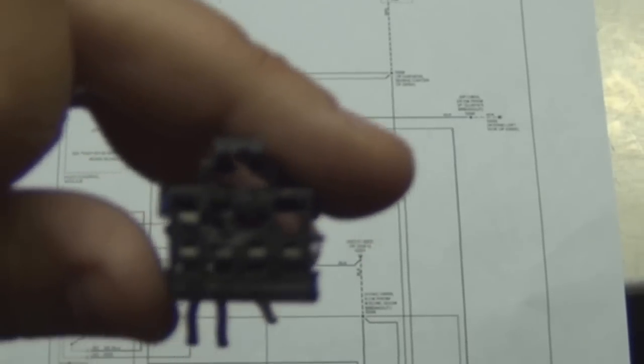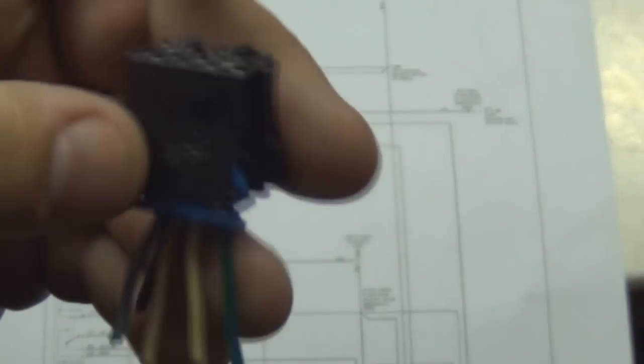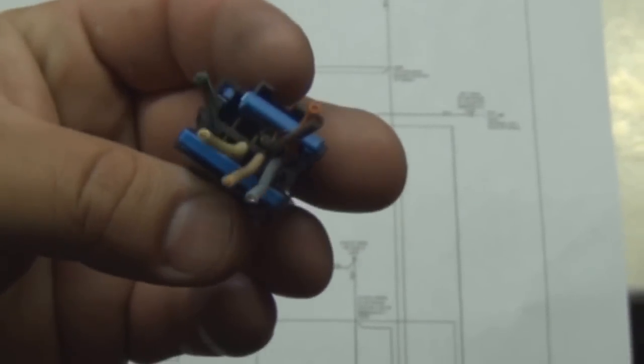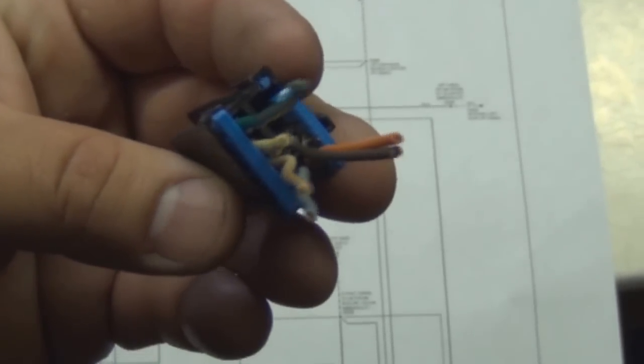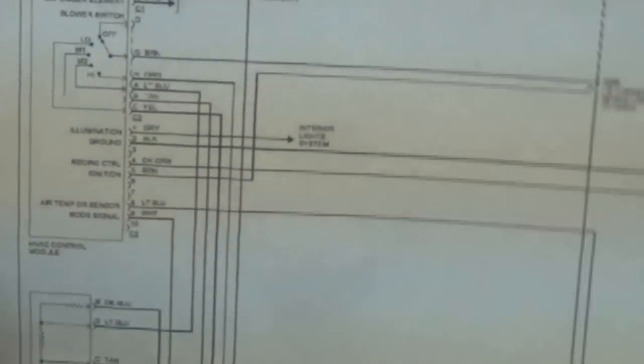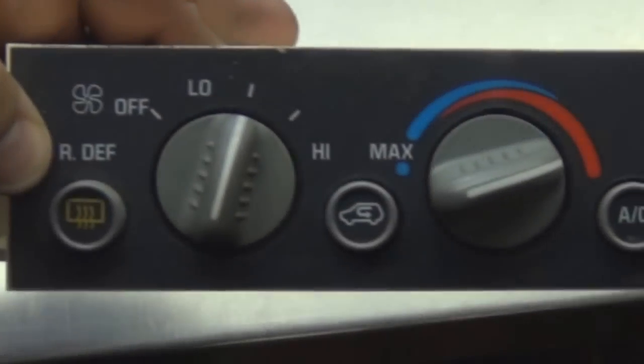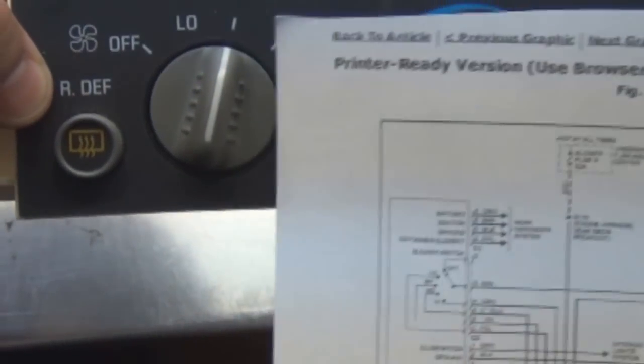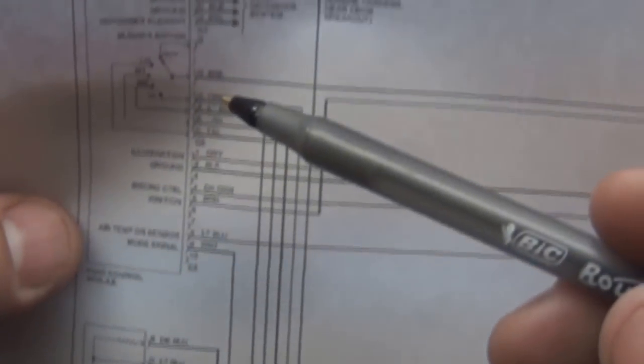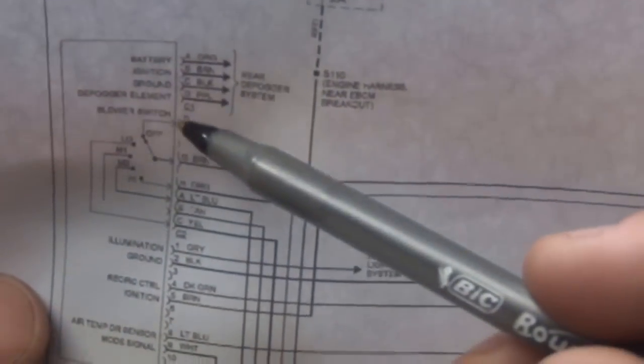To replace the connector, I cut all these wires and figured out where they all went inside the connector. To find this connector on the diagram, we knew it was the fan blower switch, so we look it up on the schematic right here.